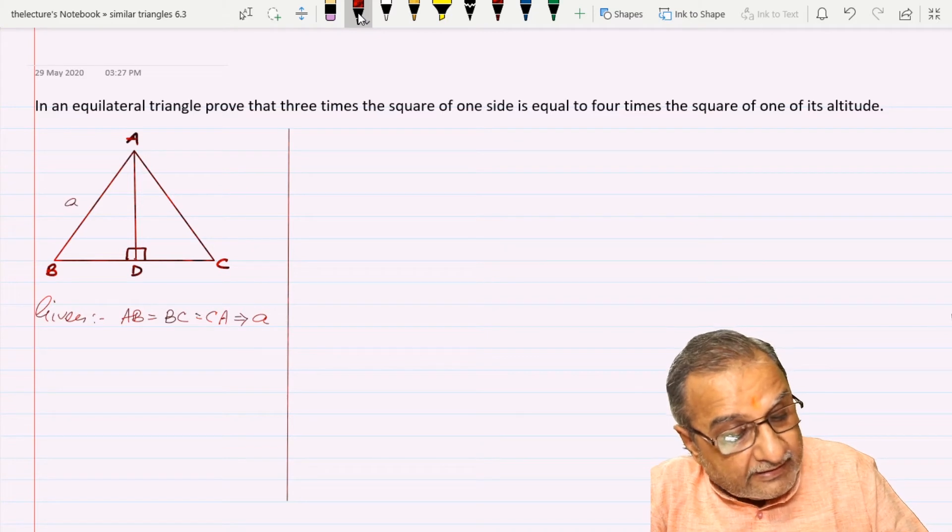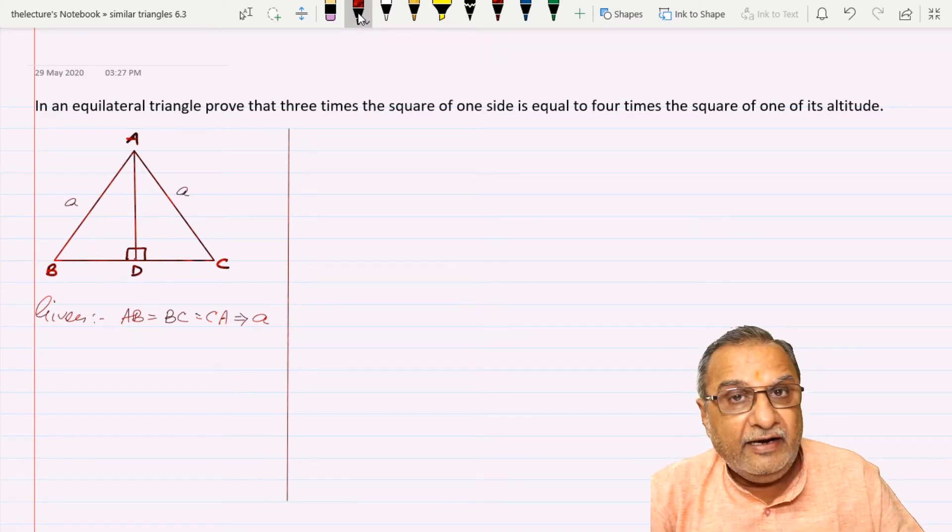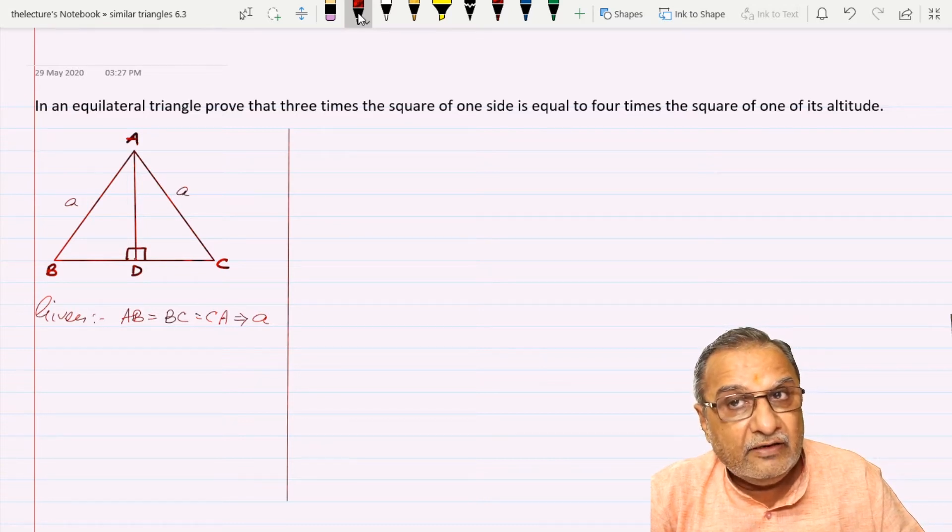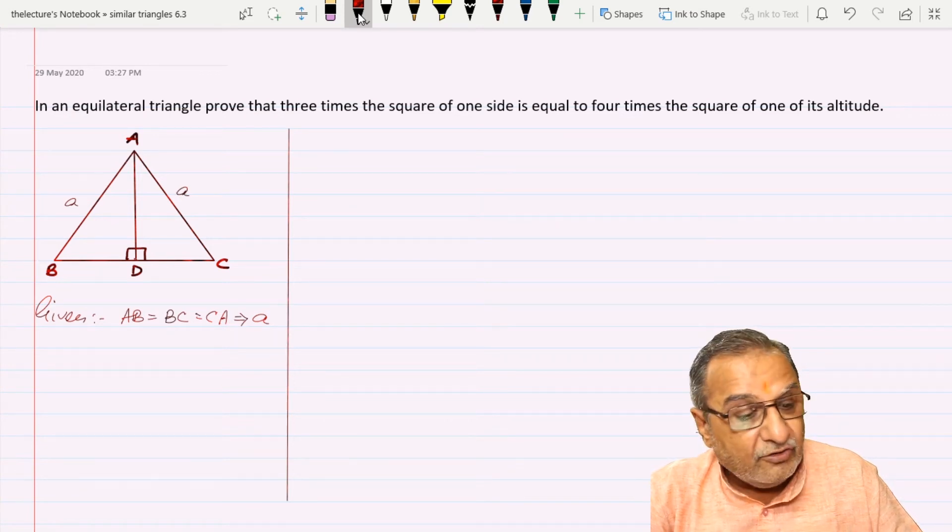AB is A, and AD is the altitude. The altitude is always treated as a median in an equilateral triangle, and the median bisects the opposite side.